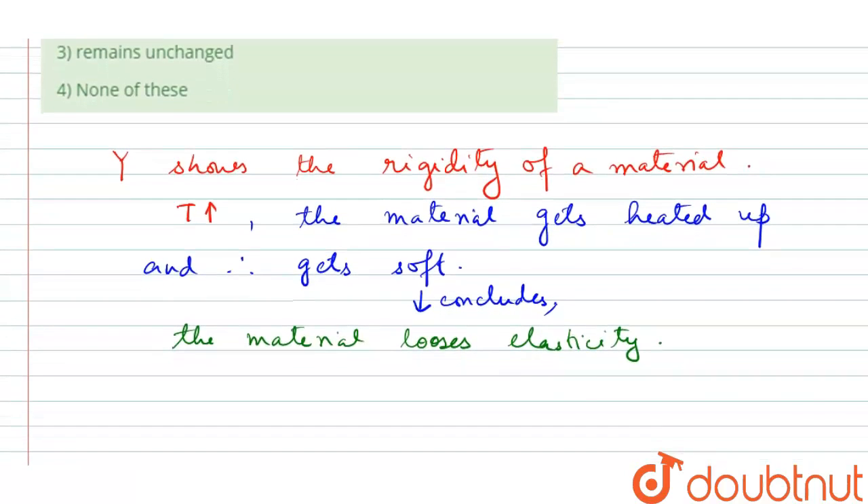So if elasticity is loosened, right, if the material loses elasticity, so rigidity is getting decreased. So hence, Young's modulus is also decreased.